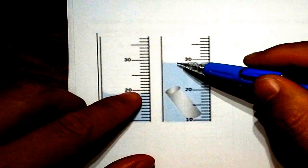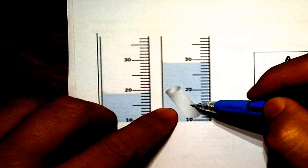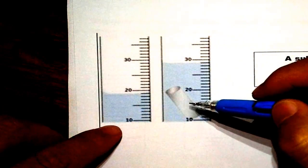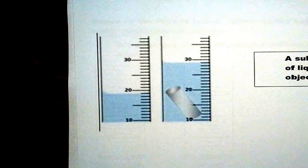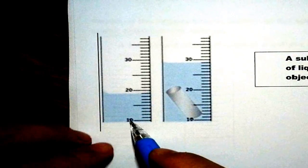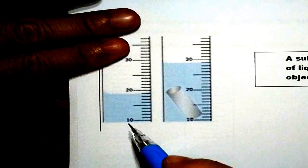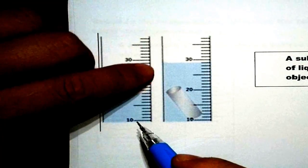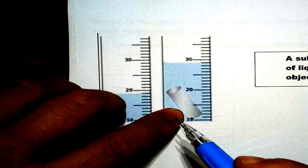Notice how there is a difference in the two readings. And that is because of the object here. This is basically going to take over the space right here and going to push the water up. And that difference, from here to there, is the volume of the object.